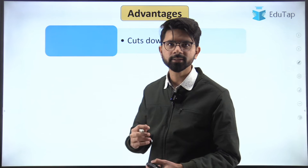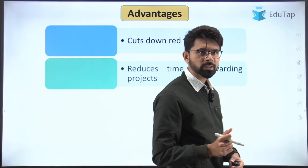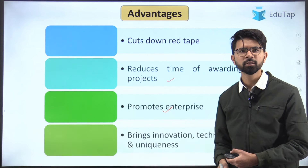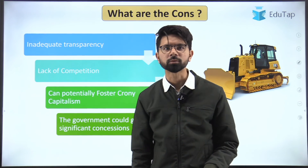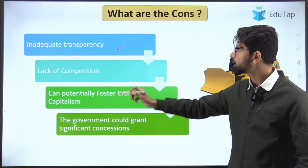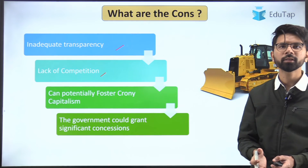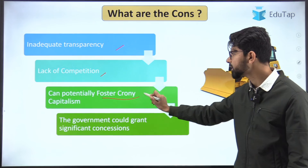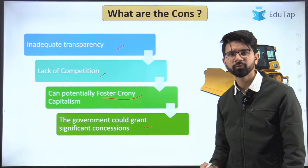The advantages: it cuts down red tapism because it is the private player coming directly with the initiative, and the government takes it up — reducing the time for awarding projects since it is completely suo motu. It promotes enterprises and brings innovation, technology, and uniqueness. However, there are cons: inadequate transparency, as the government might favor a particular businessman; lack of competition since only a few players are involved, potentially hampering public interest; and it can potentially foster crony capitalism — the government favoring particular capitalists. The government could also grant significant concessions.